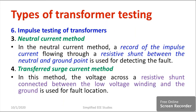Moving on to the neutral current method. A record of the impulse current flowing through a resistive shunt between the neutral and ground point is considered for detecting the fault. Based on the waveforms, you can identify whether a fault has taken place or not. That method is known as the neutral current method.